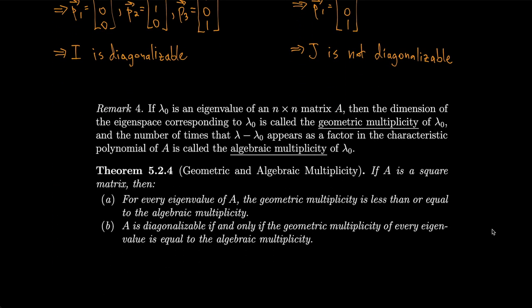If lambda 0 is an eigenvalue of an n by n matrix A, the dimension of the eigenspace corresponding to lambda 0 is called the geometric multiplicity of lambda 0. The number of times that (lambda minus lambda 0) appears as a factor in the characteristic polynomial is called the algebraic multiplicity. For every eigenvalue of A, the geometric multiplicity is less than or equal to the algebraic multiplicity. A is diagonalizable if and only if the geometric multiplicity of every eigenvalue equals its algebraic multiplicity.